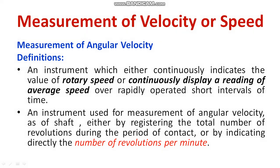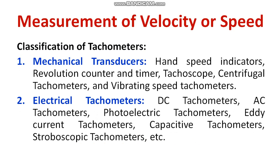The instrument used for measurement of angular velocity of a shaft works either by registering the total number of revolutions during the period of contact, or by indicating directly the number of revolutions per minute. There are two popular methods available: mechanical transducers and electrical tachometers.